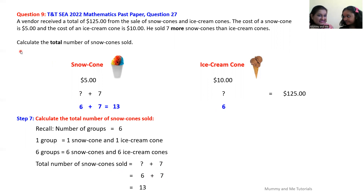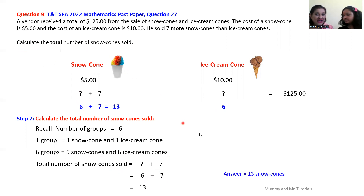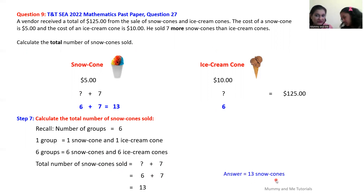The question asked us to calculate the total number of snow cones sold. The answer is 13 snow cones. The vendor sold 13 snow cones and six ice cream cones.